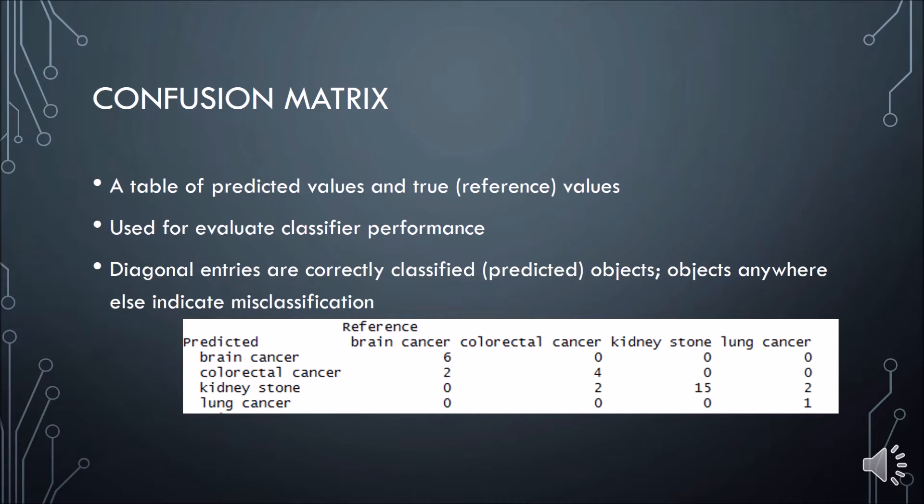For example, classifiers such as neural network, support vector machine, and naive Bayes.